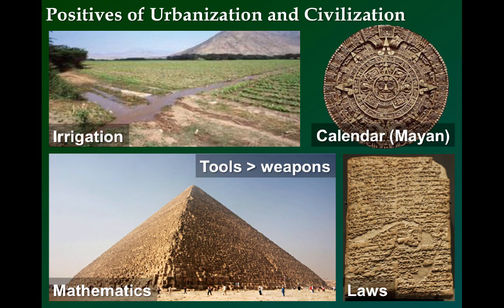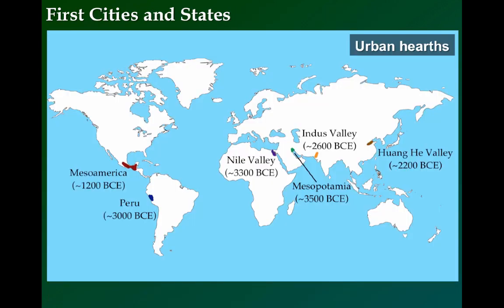Tools often became more valuable than weapons. Cities and states, whether they were cooperating or competing, improved each other through the compounding effects of political, economic, and intellectual interaction.